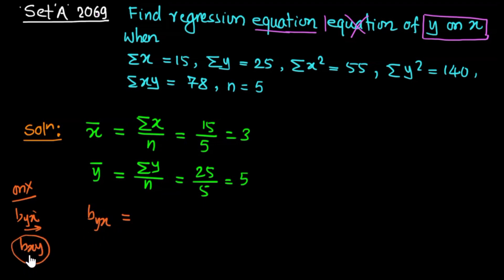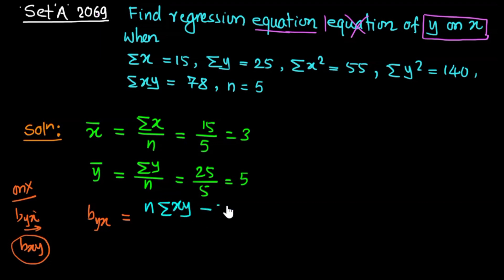The formula for the regression coefficient b_yx is: n times summation xy minus summation x times summation y, divided by n times summation x square minus summation x whole square.